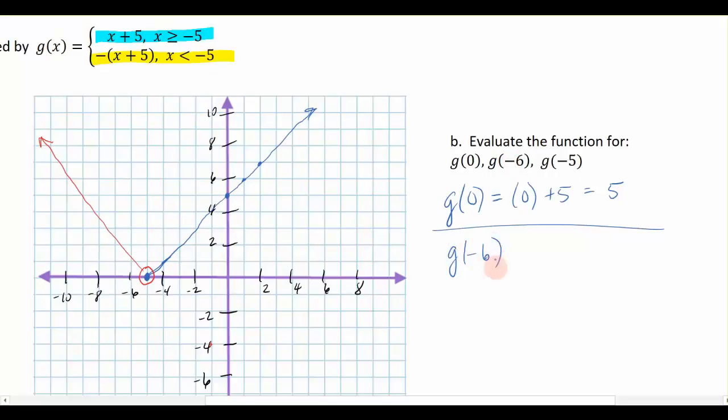How about the next one right here? So g of negative 6, which of these two am I going to choose? Well, negative 6 is less than negative 5. So we're going to plug it into the yellow equation, which would look like a negative of negative 6 plus 5. And that would be a negative 1 times a negative, which would be a positive 1. So when my function is negative 6, or in other words, when x is negative 6, the y value would be a 1, which would be here on my graph if I would have drawn it clearly.